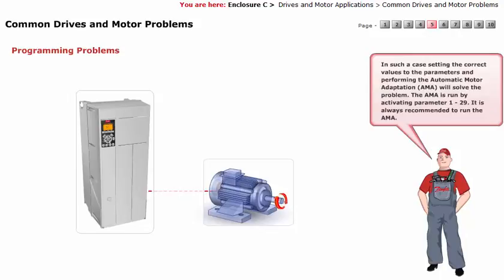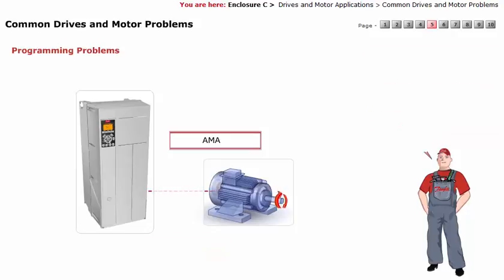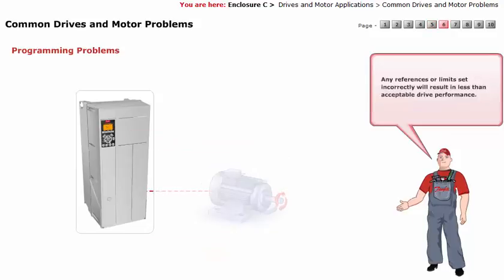In such a case, setting the correct values to the parameters and performing the Automatic Motor Adaptation (AMA) will solve the problem. The AMA is run by activating parameter 1-29. It is always recommended to run the AMA. Any references or limits set incorrectly will result in less than acceptable drive performance.